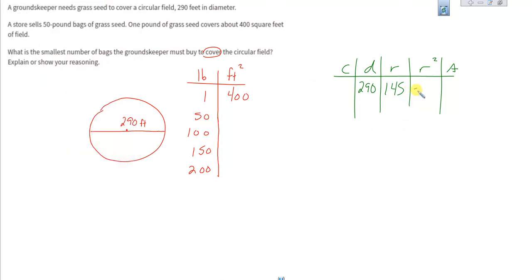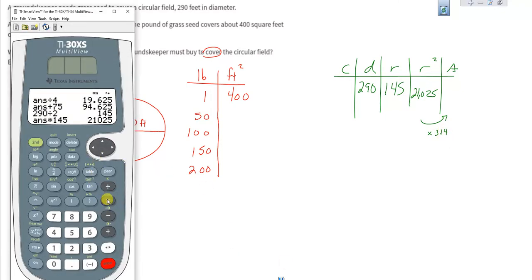21,025. And then to get to our area answer we still got to multiply by pi because it takes pi of those to fill that up. So we multiply by our pi approximation, 3.14, that gives us 66,018.5.